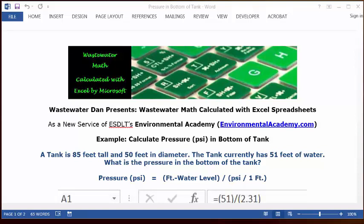Today's problem reads: a tank is 85 feet tall and 50 feet in diameter. The tank currently has 51 feet of water. What is the pressure in the bottom of the tank?